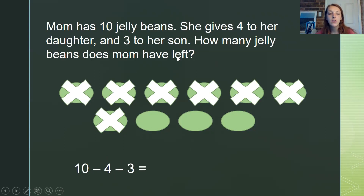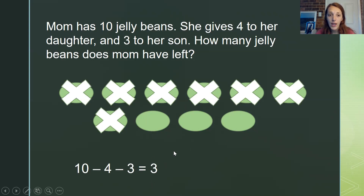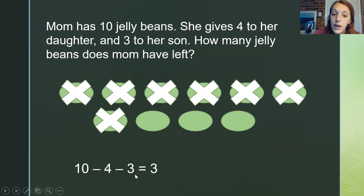Now we can figure out our answer. What is the answer to the question: how many jelly beans does mom have left? Look at your picture. How many jelly beans does mom have left after she gave all of those away? These are the ones she has left — one, two, three. She gave those away, but she has three jelly beans left. Great job. Today we looked at taking away or adding more than just two numbers — we worked with three different numbers to find our answer in both problems. You guys did a great job. That is it for this lesson, and I will see you guys next time.